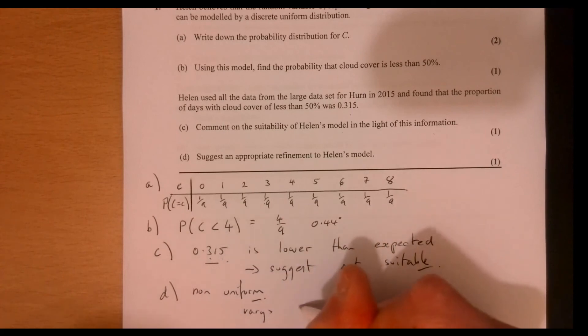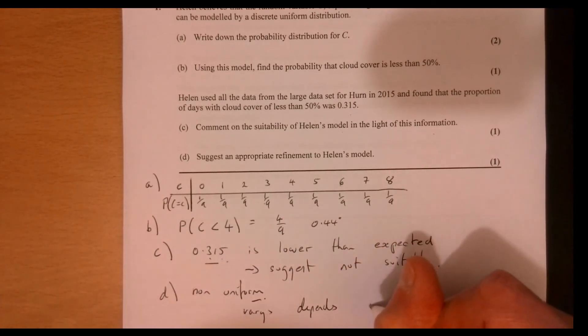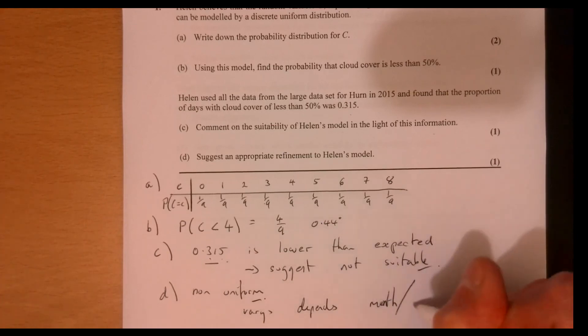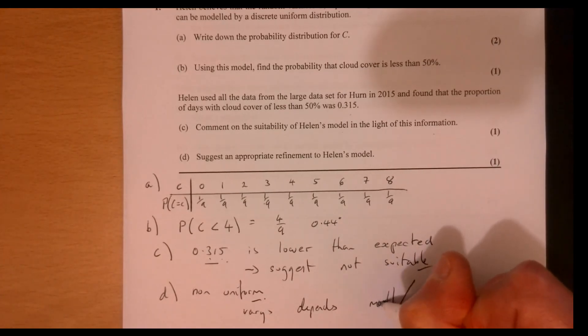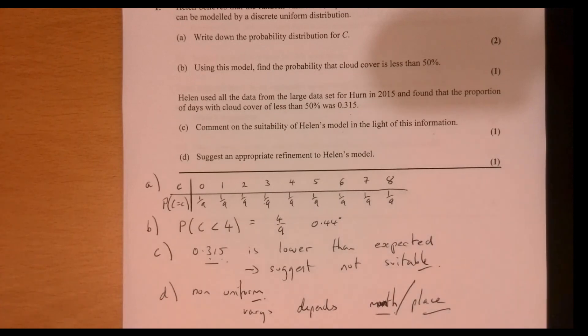Maybe varies. Depends. Maybe on the month and place. Looks like month, doesn't it? There we go. Month. That is month. All right. So something like that. It's a one marker, so you just get one point in there.